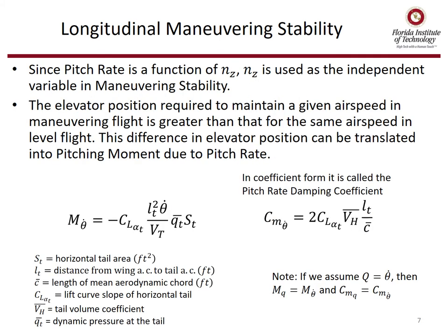Since pitch rate is a function of NZ, NZ is used as the independent variable when evaluating maneuvering stability. The elevator position required to maintain a given airspeed in maneuvering flight will be greater than that for the same airspeed in level flight. This difference in elevator position can be translated into a pitching moment due to pitch rate. We have equations for m-theta-dot, or mq, in both dimensional and non-dimensional form as cm-theta-dot or cmq. They are a function of the lift curve slope of the tail, the moment arm between the tail aerodynamic center and the main wing aerodynamic center, and other parameters like dynamic pressure and tail area.